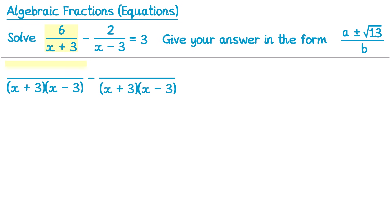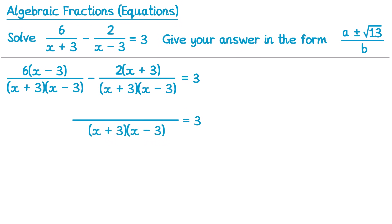Then we compare the first fractions: to get from x plus 3 to x plus 3 multiplied by x minus 3, we multiply by x minus 3. So we need to multiply that 6 on the top by x minus 3. And when we compare the second fractions, this time we've multiplied by x plus 3, so on the top we need 2 lots of x plus 3. And this equals 3. Now we can combine them into one big fraction over that common denominator. We have 6 lots of x minus 3, then a subtraction sign, and then 2 lots of x plus 3.